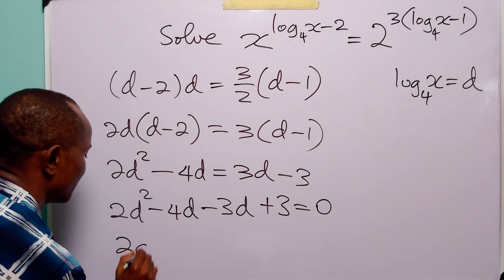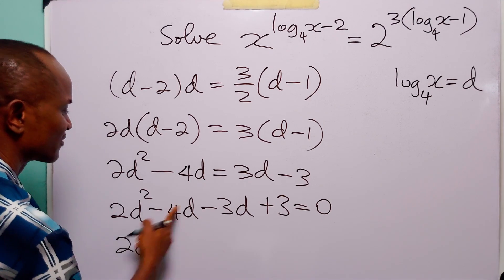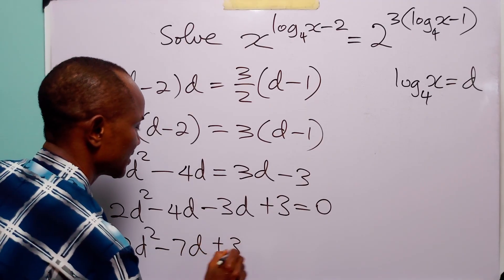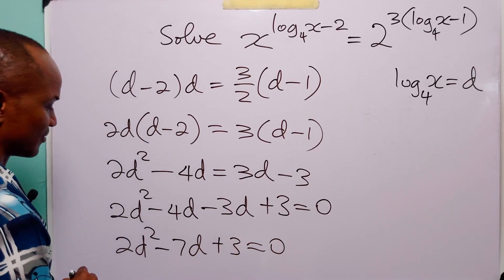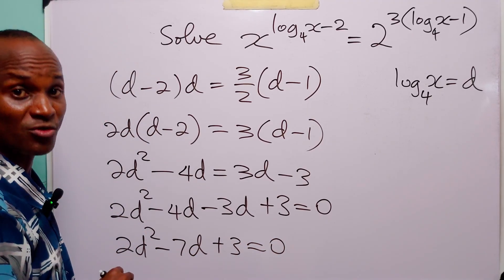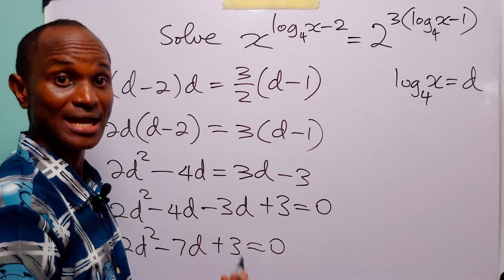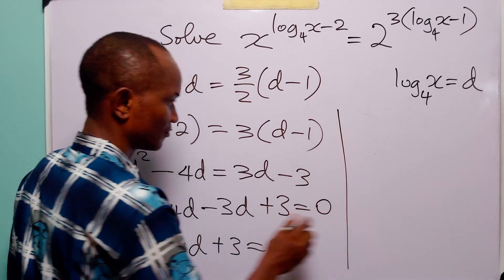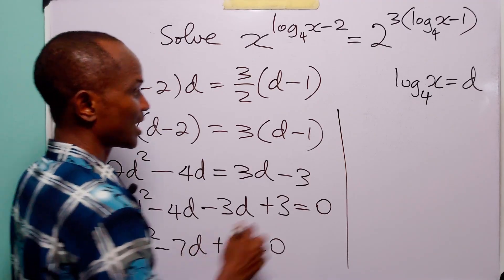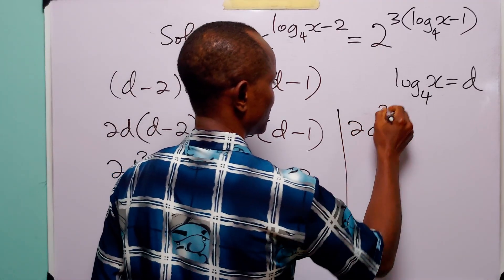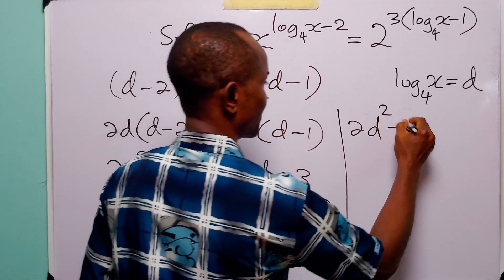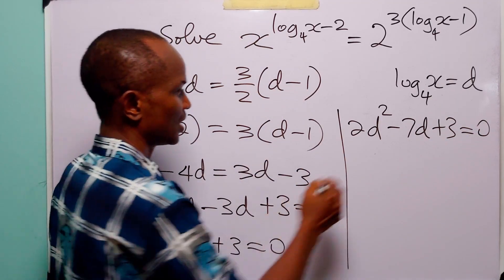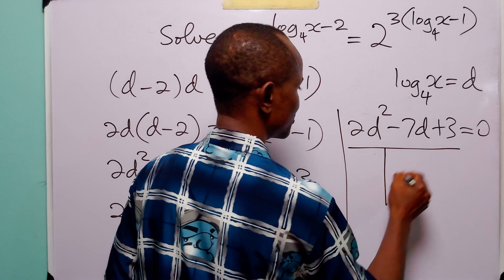Bringing all the terms over to the left hand side, we have 2d squared minus 4d minus 3d plus 3 is equal to 0. From here we have 2d squared, and minus 4d minus 3d is minus 7d, plus 3 is equal to 0. Now you can see that we have a quadratic equation in d which we can solve for values of d.